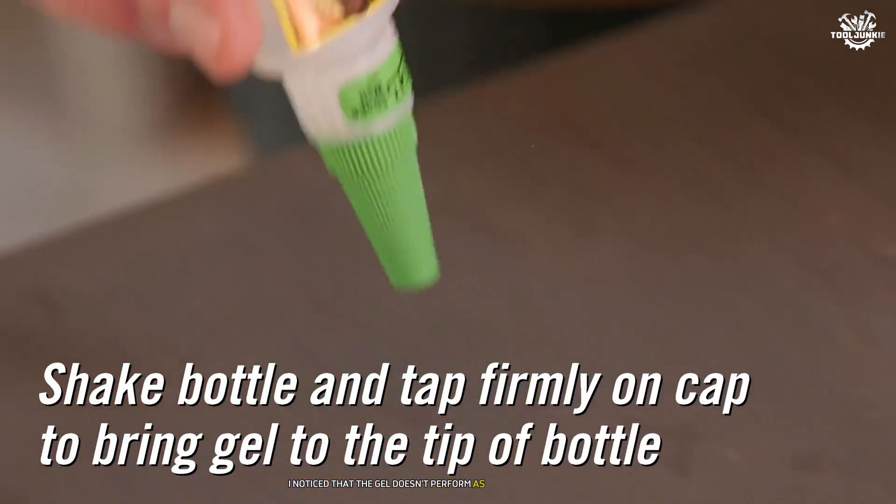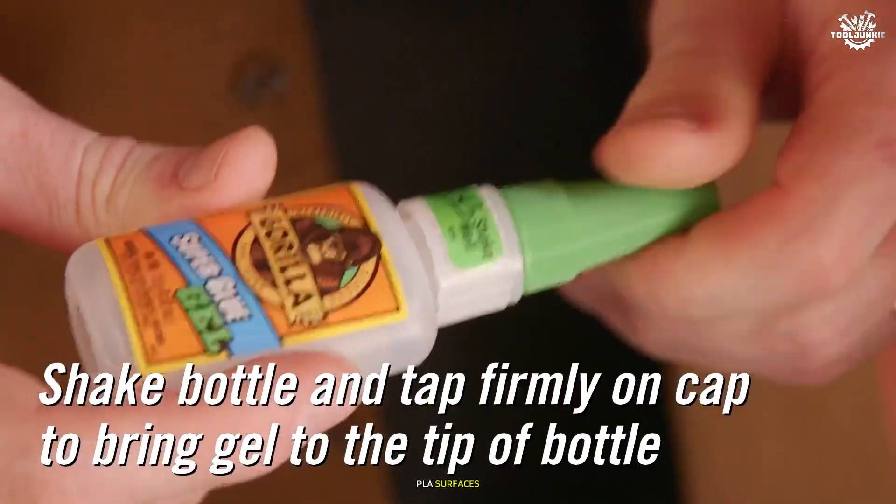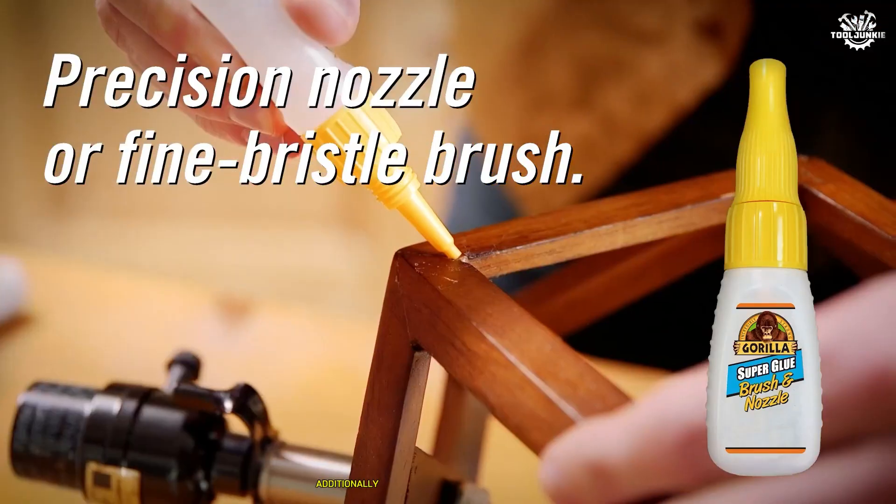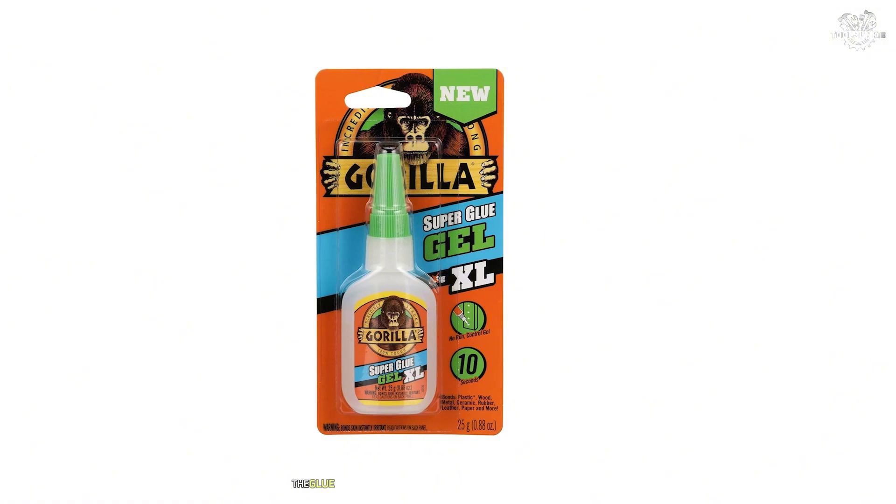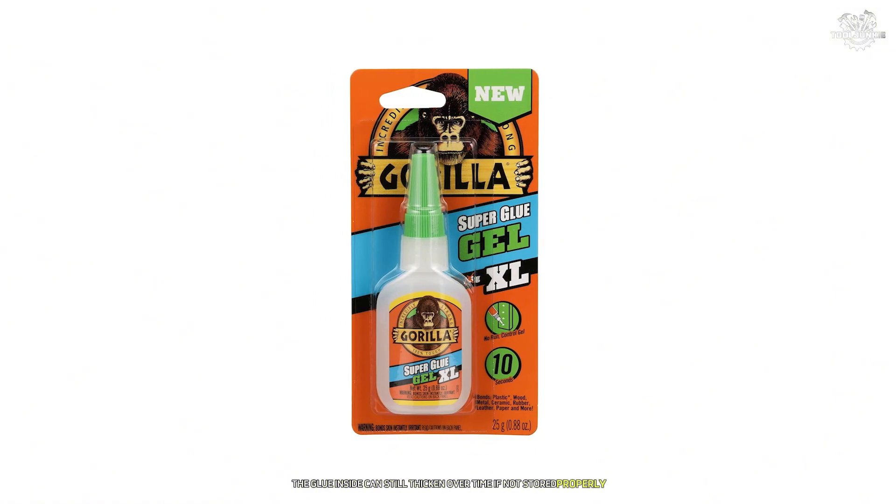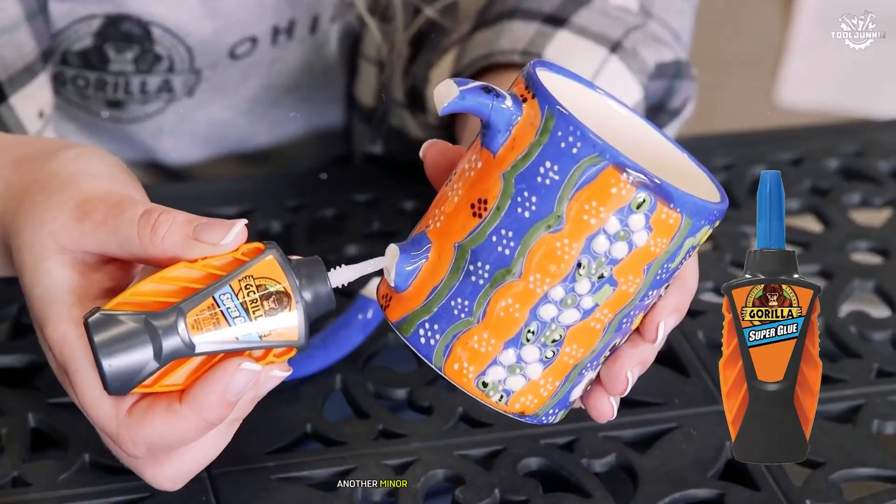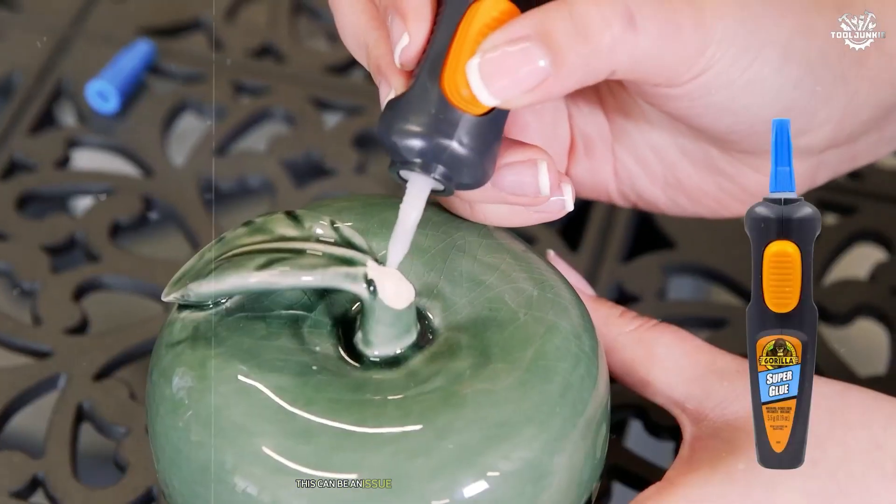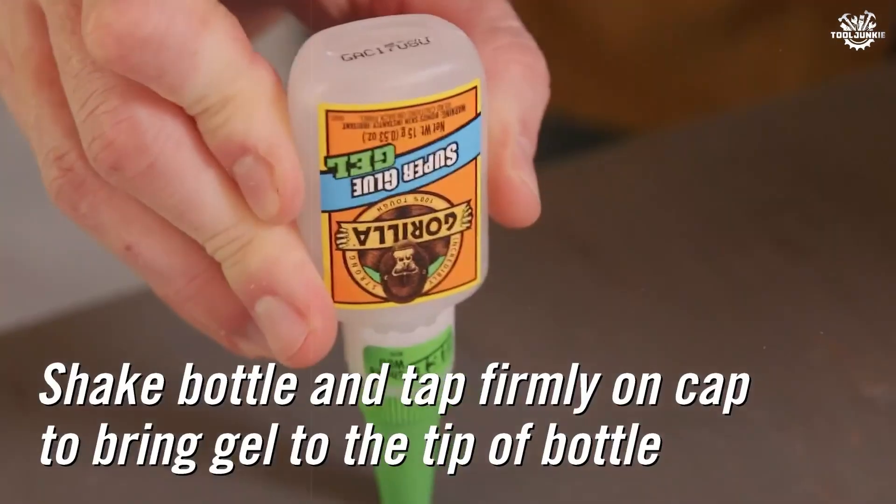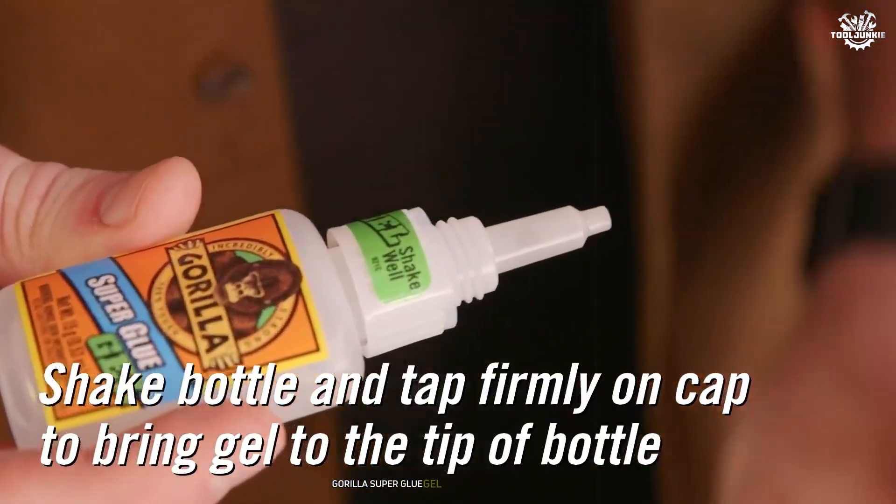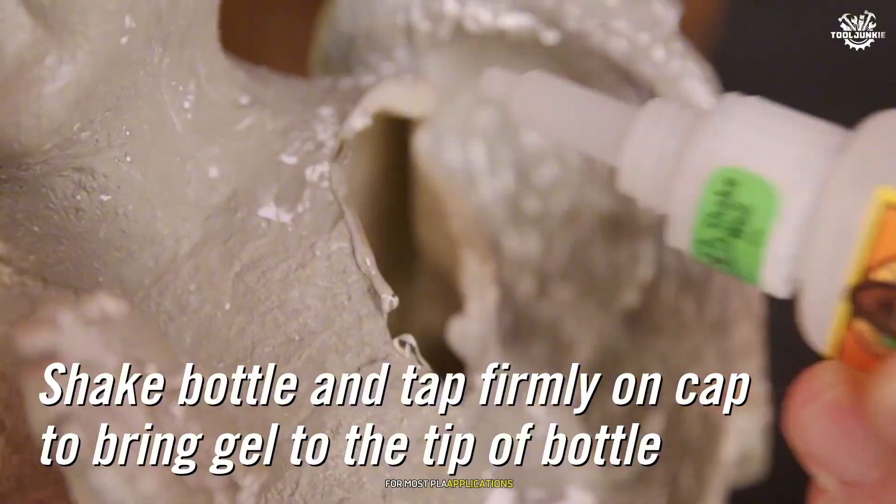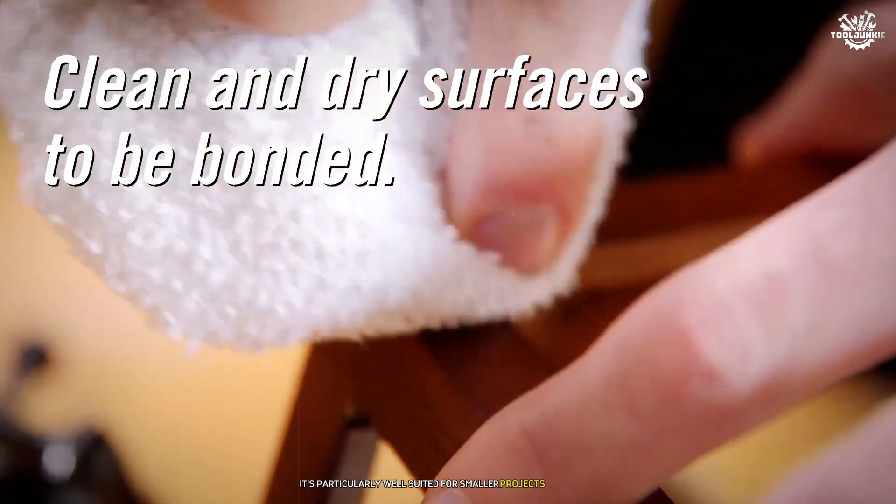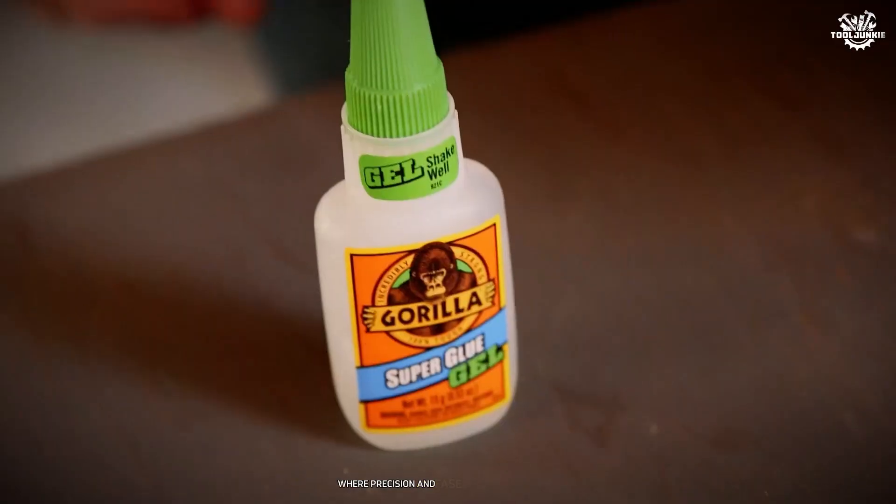However, I noticed that the gel doesn't perform as well on rough or uneven PLA surfaces. It tends to struggle with achieving a seamless bond in such cases. Additionally, while the anti-clog cap is a great feature, the glue inside can still thicken over time if not stored properly, leading to waste. Another minor drawback is the visible residue it leaves behind after curing. This can be an issue if aesthetics are important in your project. Despite these shortcomings, Gorilla Superglue Gel remains a reliable option for most PLA applications due to its versatility and user-friendly design. It's particularly well-suited for smaller projects or repairs where precision and ease of use are priorities.